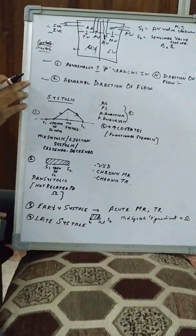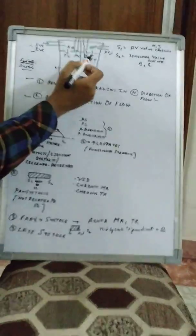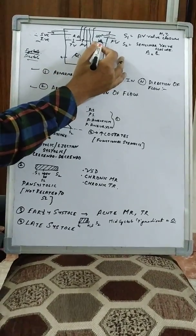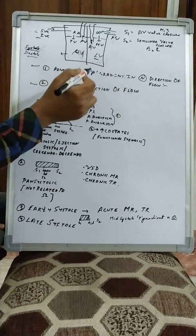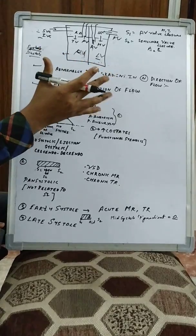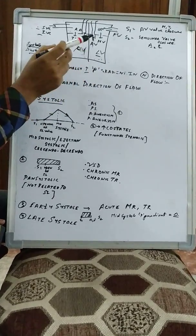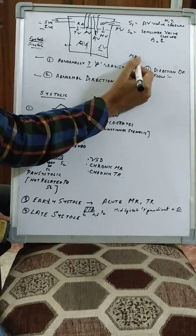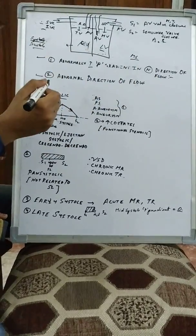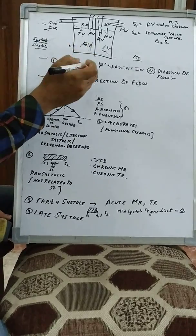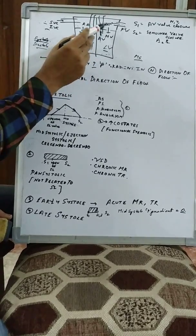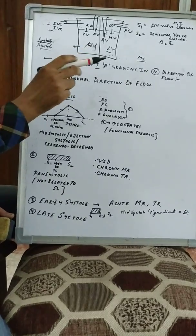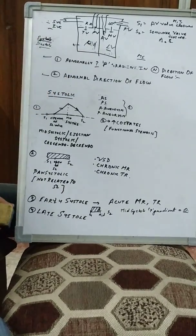For example, in mitral stenosis, the blood from the left atrium is not able to come into the left ventricle during diastole. Normally during diastole the blood should come from left atrium to left ventricle, but in mitral stenosis it cannot. Hence there is an abnormal pressure gradient buildup in the left atrium and low pressure in the left ventricle, which leads to a decreased pressure gradient and a murmur is heard.